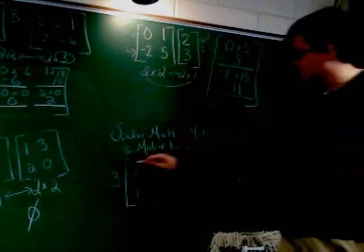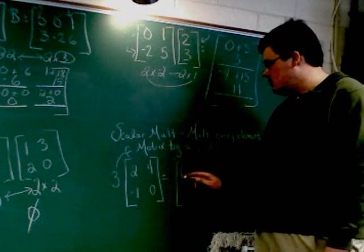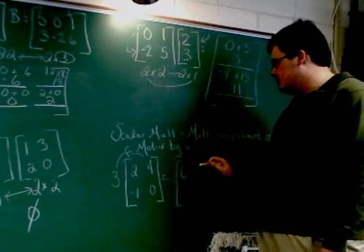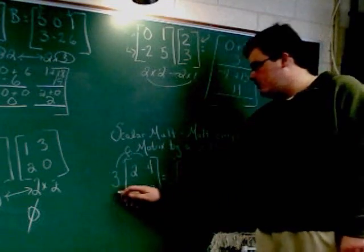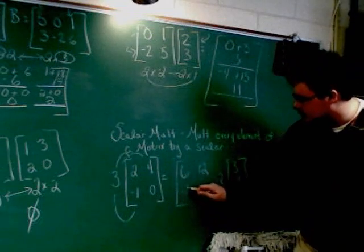So I'm going to do 3 times 2, which is 6. 3 times 4, which is 12. 3 times negative 1, which is negative 3.